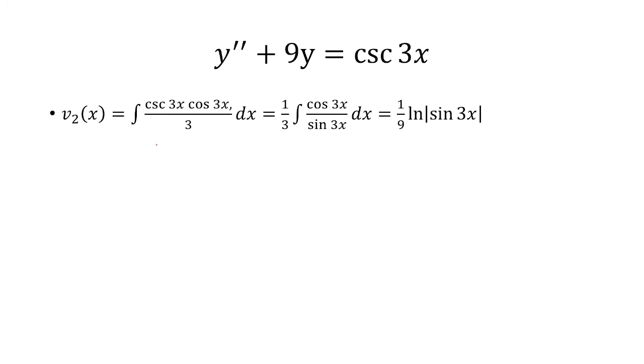v₂, we use f(x) and then this one was y_a which we said is cosine 3x and then over the Wronskian which was 3. Cosecant over cosine, cosecant is 1 over sine so I can just rewrite that as cosine over sine with the 1/3 factored.